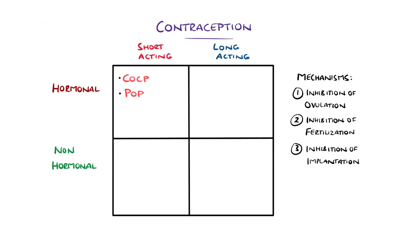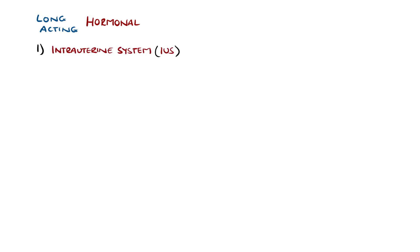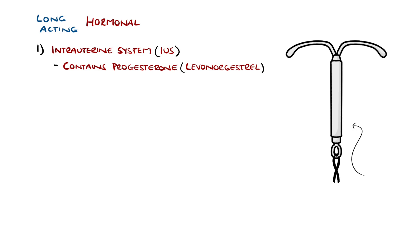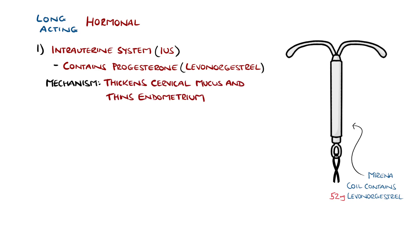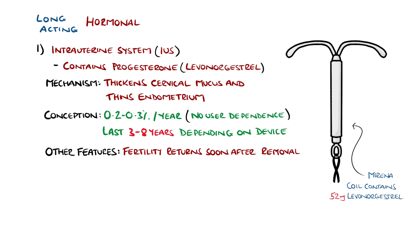Now looking at long-acting hormonal options. Coils come under the long-acting reversible contraceptives or LARCs, and have hormonal and non-hormonal options. The hormonal version is called an intrauterine system, typically containing progesterone — specifically levonorgestrel — an example being the Mirena coil that contains 52mg of levonorgestrel. The main mechanism of action is through thickening of the cervical mucus and thinning of the endometrium. Conception rates are around 0.2-0.3% per year with no user dependence. They are replaced roughly every 3-8 years depending on the device. Fertility normally returns as soon as the device is removed, often periods become lighter, and around 20% of females will have no periods after the first year, which is why it can also be used as a treatment for menorrhagia.